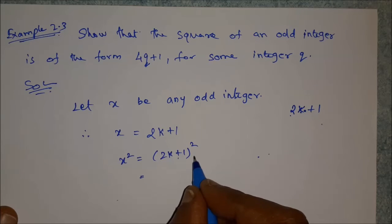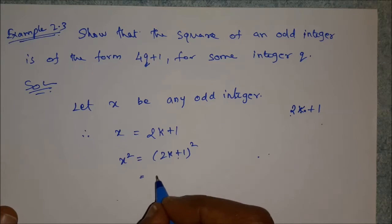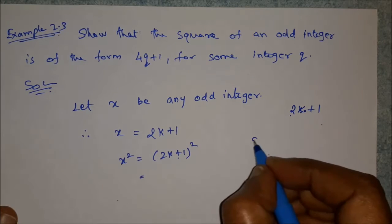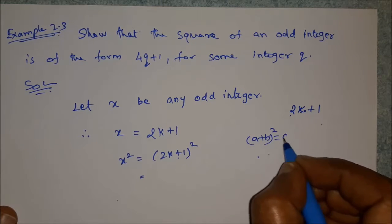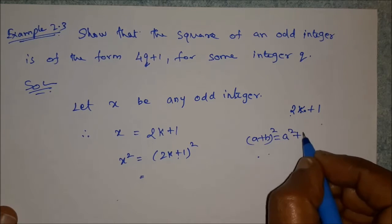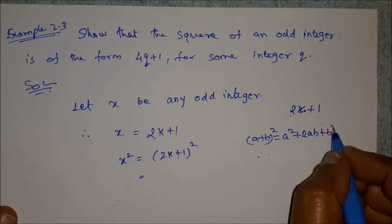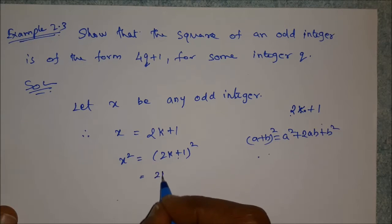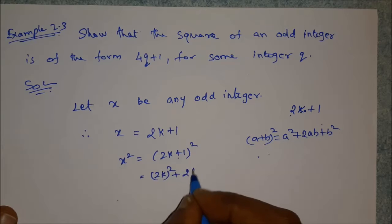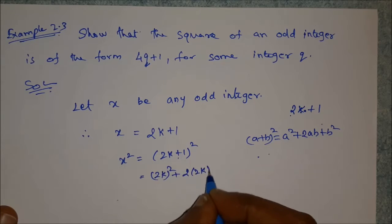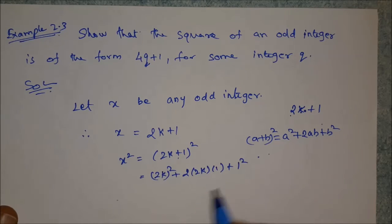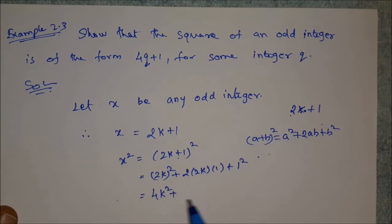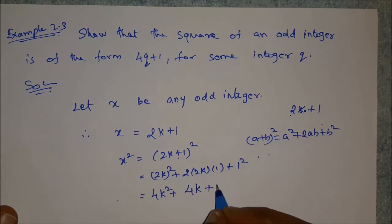This uses the (a plus b) whole square formula: a plus b whole squared equals a squared plus 2ab plus b squared. Applying this: (2K plus 1) squared equals 4K squared plus 2 times 2K times 1 plus 1 squared, which gives 4K squared plus 4K plus 1.